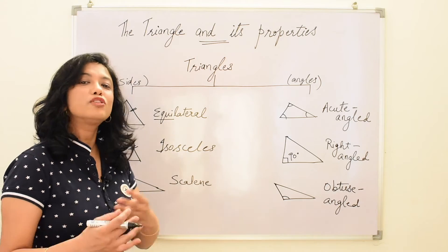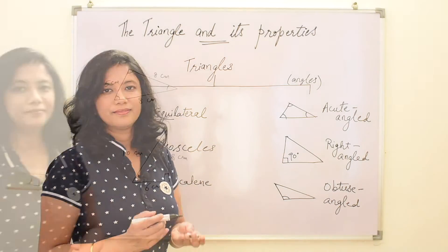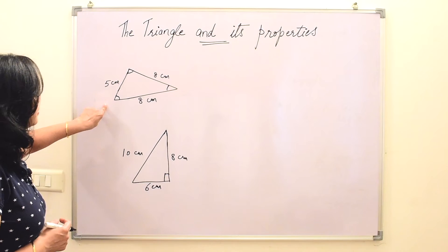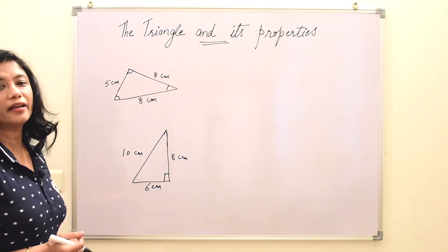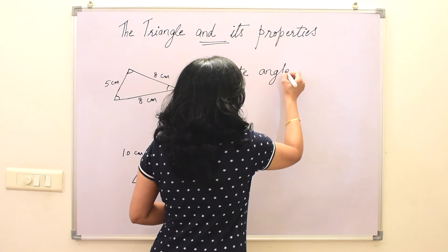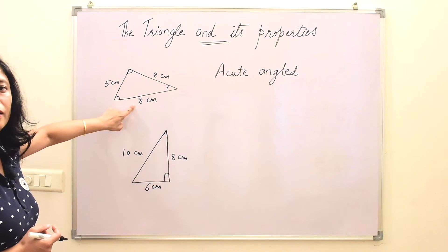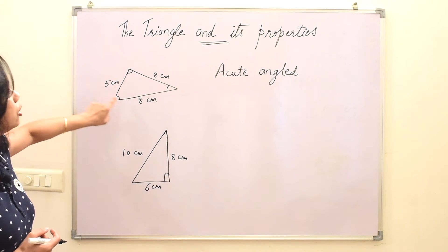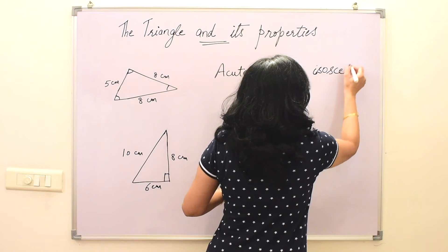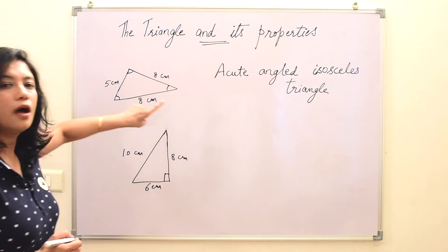So based on sides we have three types, and based on angles also three types — almost everything in triangles goes in threes. Now let us see how we name triangles. Take this triangle: all angles are acute, so it is acute angled. Two sides are equal — both are 8 cm and one is 5 cm — so it is isosceles. This is an acute angled isosceles triangle.